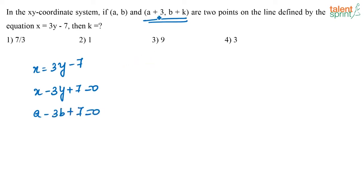Similarly, this is also a point on the line. So if I put x is equal to a plus 3 and y is equal to b plus k, still I will get x minus 3y plus 7 is equal to 0.